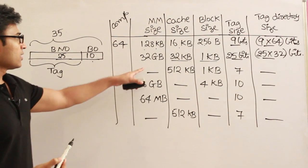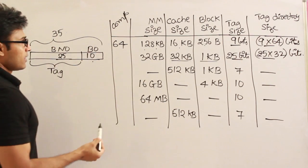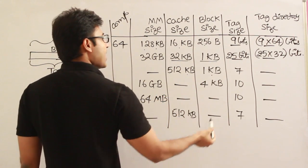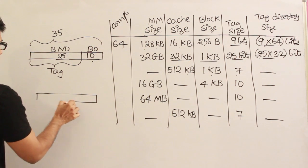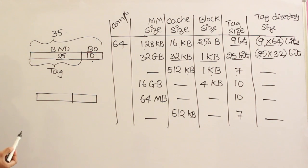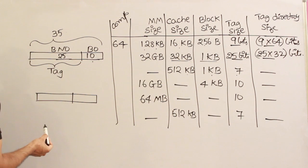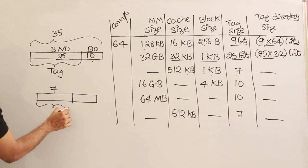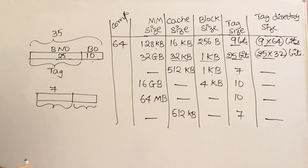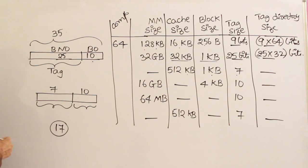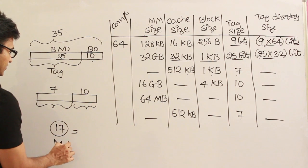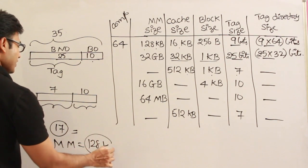Next problem: cache size, block size, and tag bits are all given — this is a reverse problem. In associative memory, tag bits are the block number. If tag is 7 bits and block size gives 10 bits of offset, the physical address is 17 bits, meaning main memory size is 128KB. But this is problematic because the cache is given as 512KB, which is larger than the main memory.